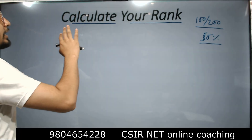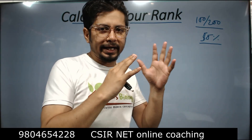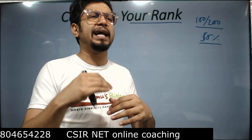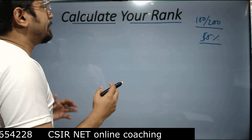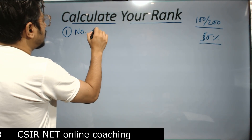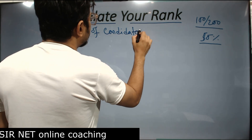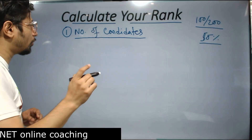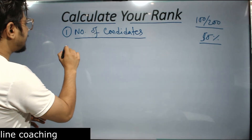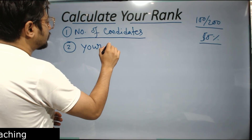The percentile is a comparative score. To calculate your rank from percentile, remember there are a lot more things going on. I'm going to give you a simple basic idea from which you can tentatively calculate your rank. There are three factors. The most important is the number of candidates who applied for CSIR NET in that particular session — without this data you can never calculate the rank. Second is your percentile score.